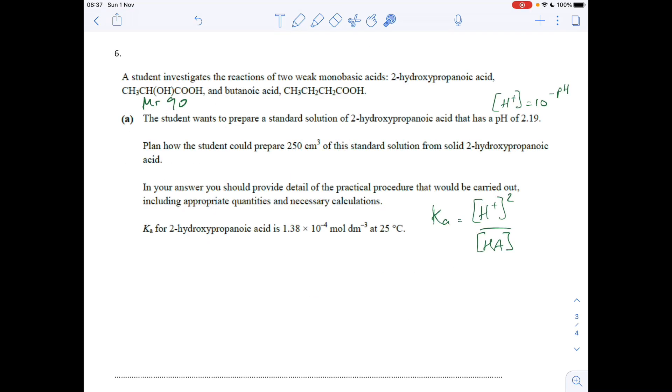Moving on to question 6. You'll see I've put a few bits of information next to certain things. The Mr of the 2-hydroxypropanoic acid is 90, that's going to come in handy. pH 2.19, that's what the pH has to be, so we could work out the H+ concentration needed. We're given the Ka for the acid, and that's linked to the H+ concentration and HA by this equation here. Effectively what we need to calculate is what does the concentration of this solution need to be. That'll tell us how many moles are in a decimeter cubed, and if we just quarter that, it'll tell us how many moles need to be in that 250 cm³. Then from the Mr we can work out how many grams are needed.